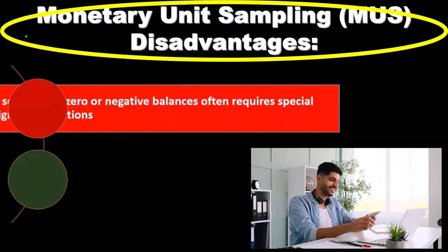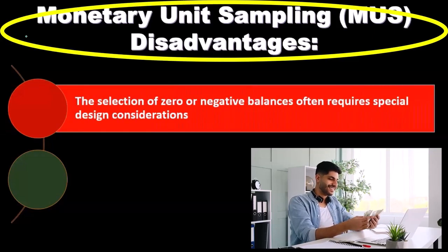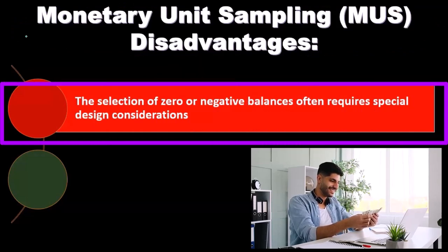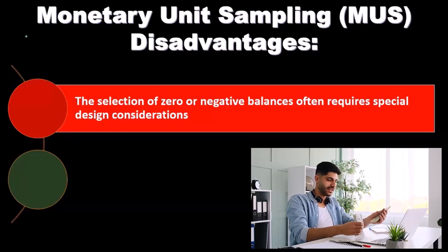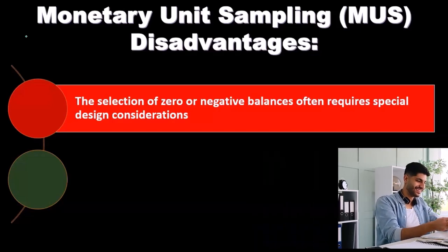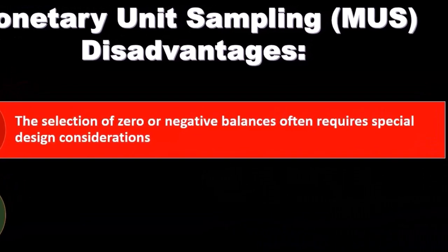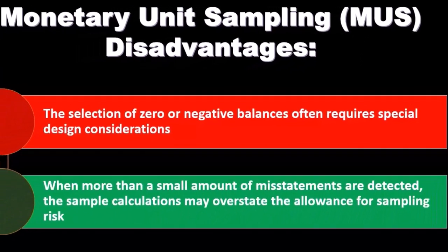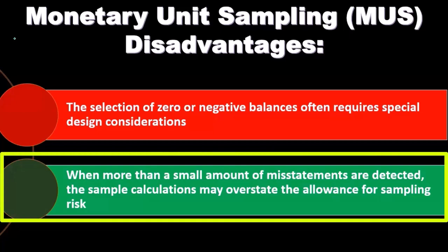Disadvantages of MUS include the selection of zero or negative balances, which often requires special design considerations. Given the way monetary unit calculations work, a zero or negative balance can throw off the process and therefore requires special handling.